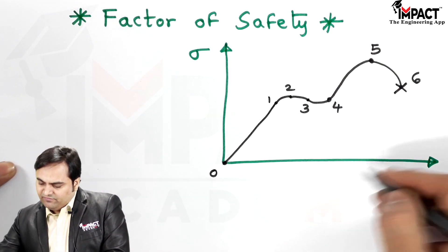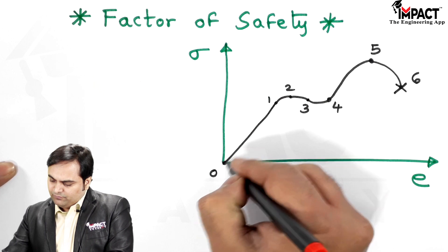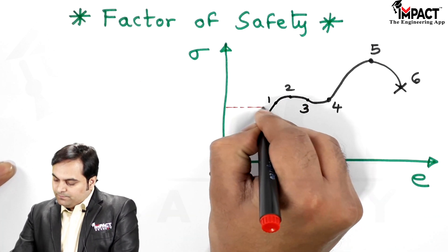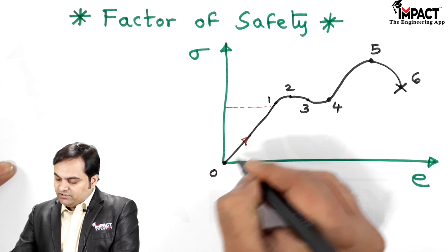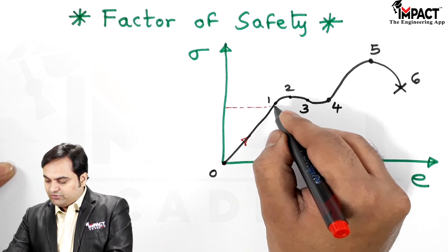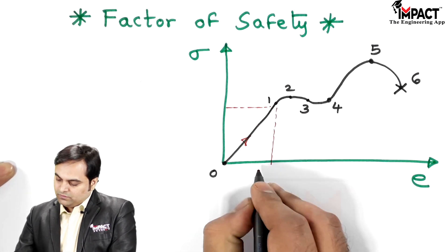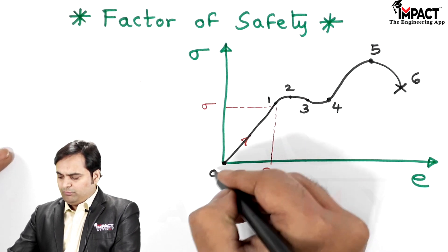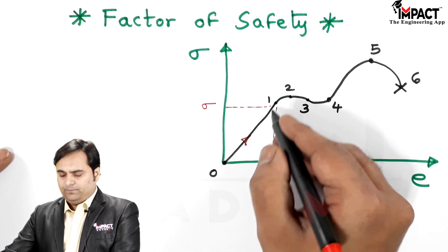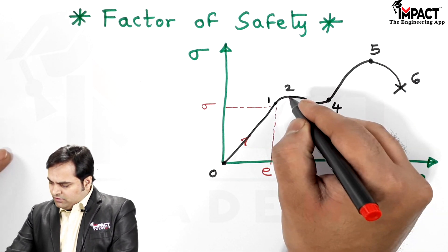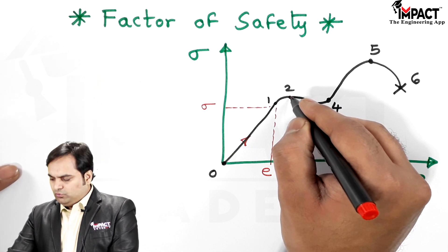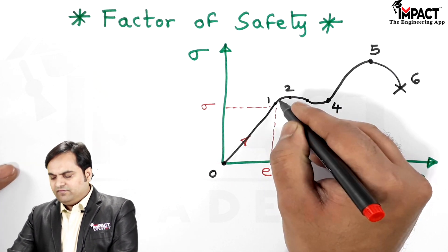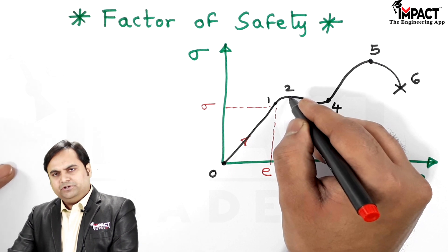In this graph, from point 0 to point 1 it is called the proportional limit, where stress is directly proportional to strain and the material obeys Hooke's law. After that, when it reaches point number 2, that is called the elastic limit — the material behaves in an elastic manner up to point number 2.